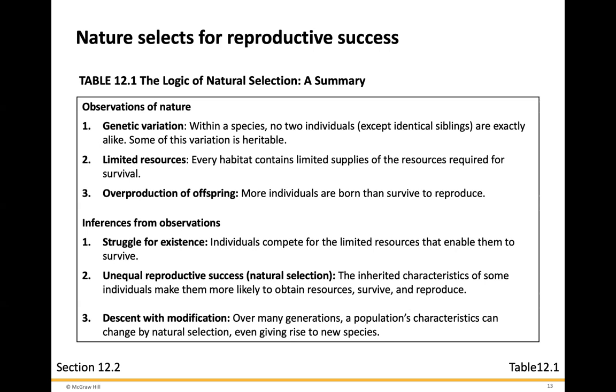From these observations come inferences: the struggle for existence, where individuals compete for limited resources that enable them to survive. Unequal reproductive success — natural selection — means the inherited characteristics of some individuals make them more likely to obtain resources, survive, and reproduce. The weak may not necessarily survive. And then descent with modification: over many generations, a population's characteristics can change by natural selection, even giving rise to new species.